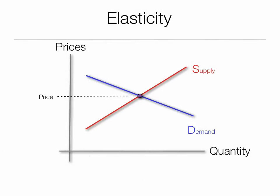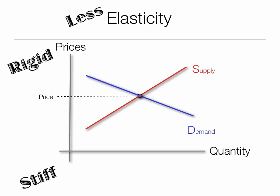With the old supply-demand curves, we still have the market price, but prices change depending on the elasticity of demand. When demand is less elastic, it's more rigid. There's less choices for consumers to make, and we say the demand is stiff. You can't really make a lot of choices when demand is inelastic.